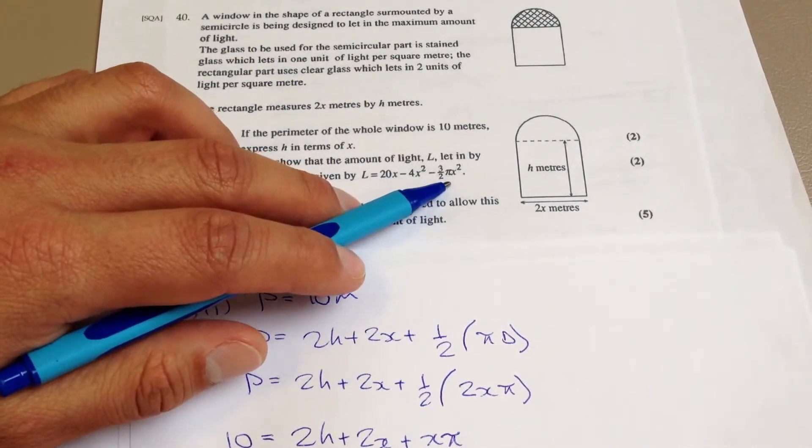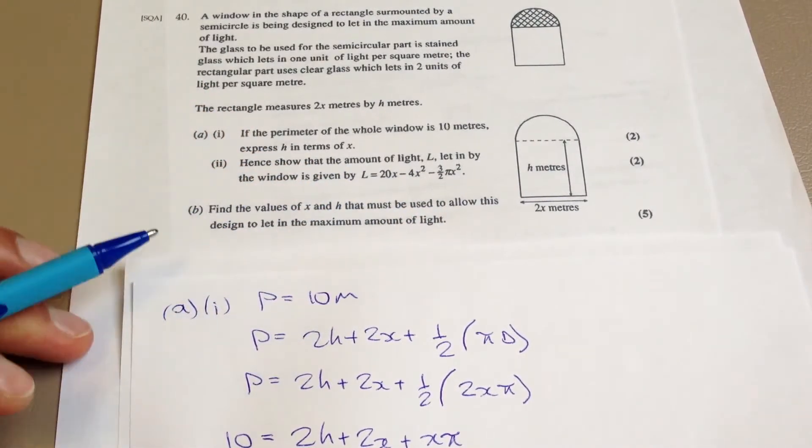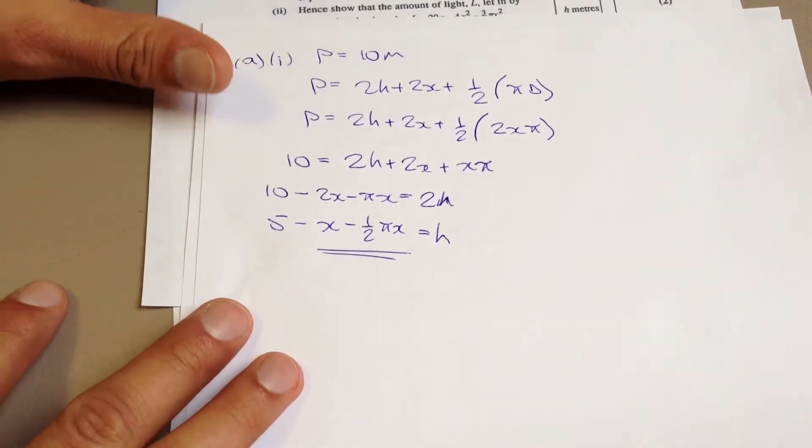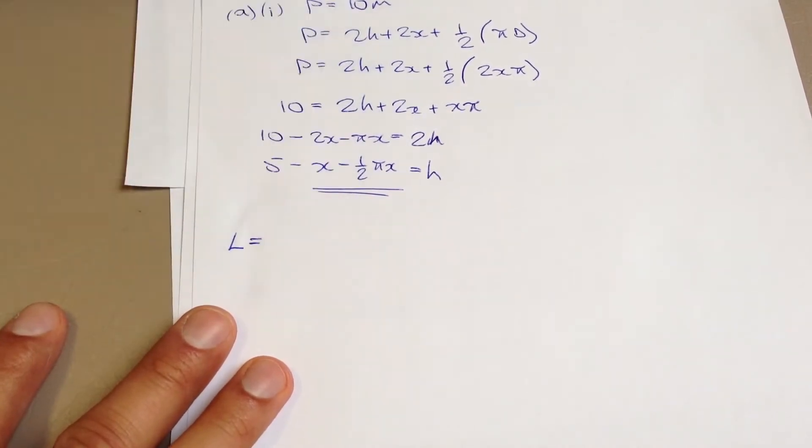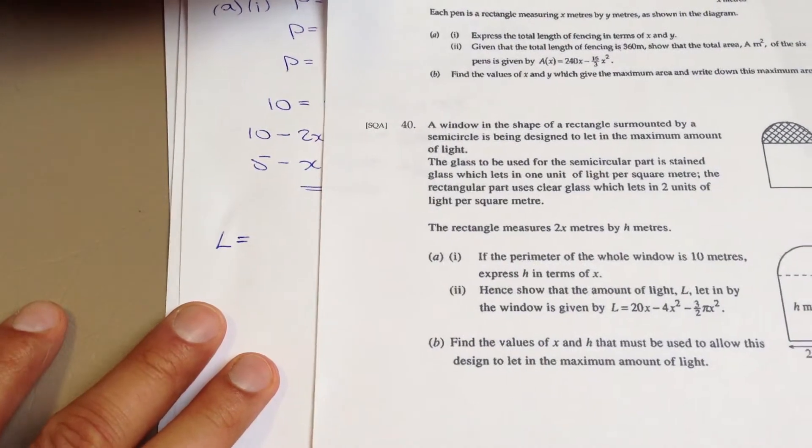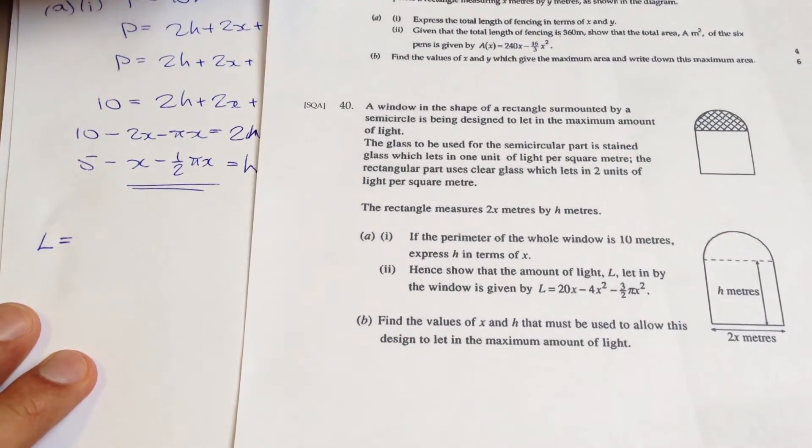Now, you'll notice, once again, h does not play a role in this. So what we'll do is we'll do it like that. Let's move this up so that we can actually see it. L equals, I wonder, in fact, if I bring this over here, if you can see it. If I slide this over, et voila, that just works out.